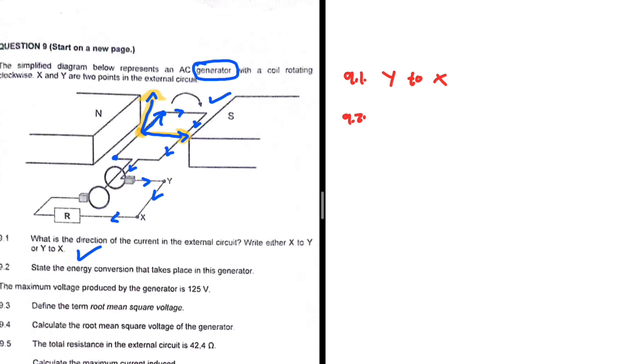Then 9.2 says state the energy conversion that takes place in this generator. In a generator, we convert mechanical energy to electrical energy. That is 9.2.